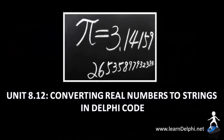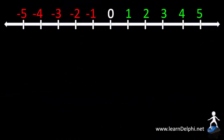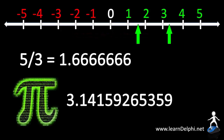In this video, I'm going to demonstrate how to write code to convert real numbers to strings before displaying them as output. A real number is any number that you can find on the number line, including decimal numbers. It is also often referred to as floating point numbers because of the decimal point. Real numbers are often the result of a division or a very precise calculation.